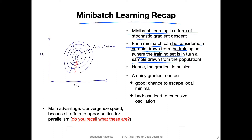So if we draw these small mini batches, these small samples, we will actually get noisier gradients compared to using the whole training set. But this can have advantages and disadvantages using smaller mini batches compared to the whole training set for computing the gradient. Using mini batches instead of the whole training set can lead to noisier gradients, but they can actually be quite good because they can help us to escape local minima.